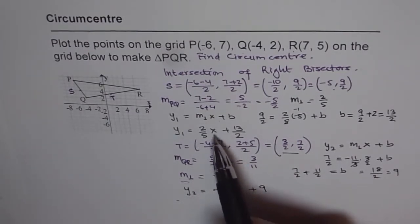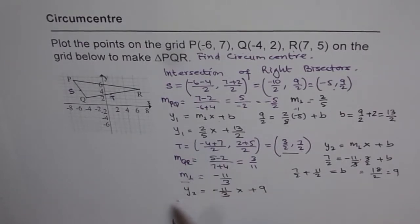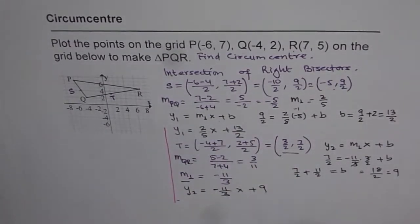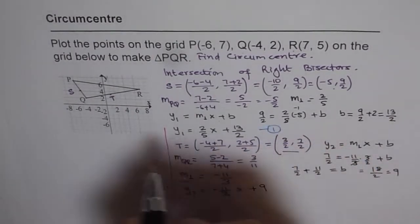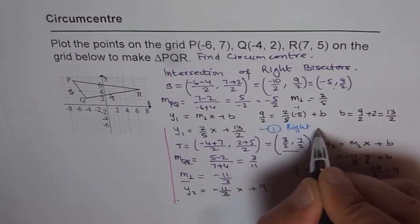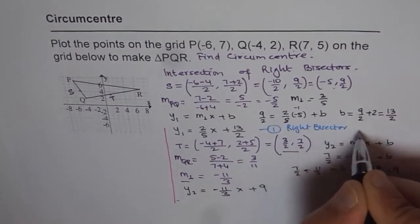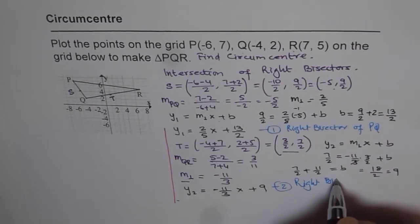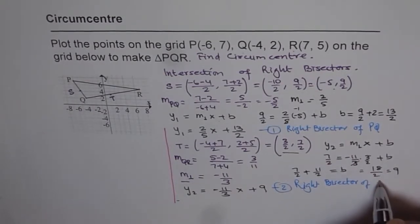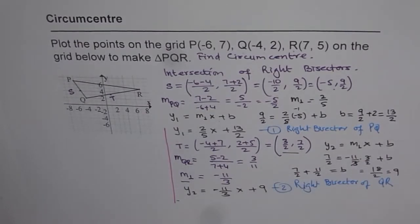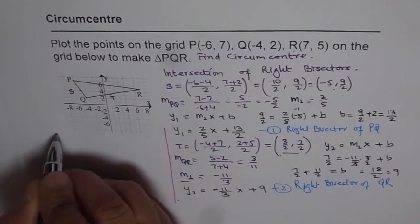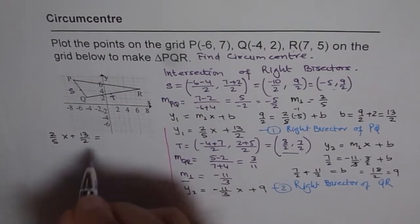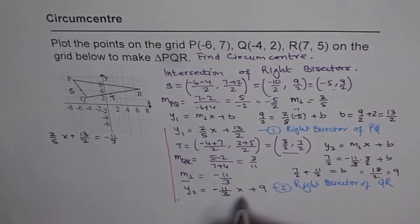We now have two equations — the right bisectors of PQ and QR. To find the circumcenter, we equate both equations and solve for x: (2/5)x + 13/2 = (-11/3)x + 9.